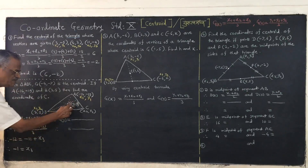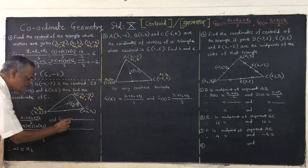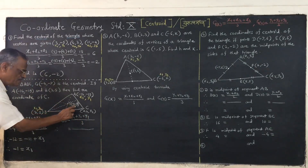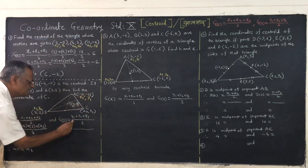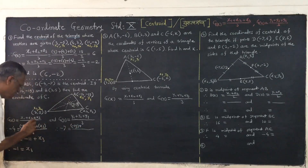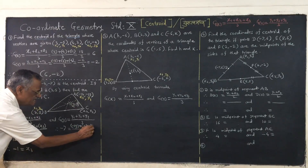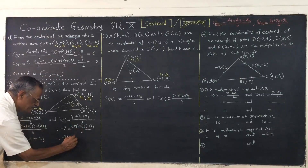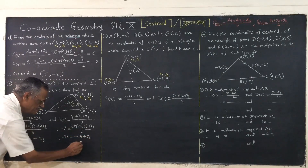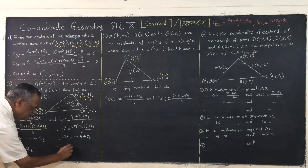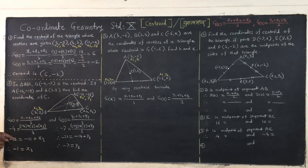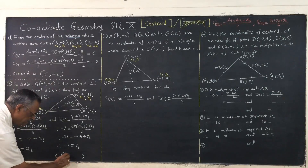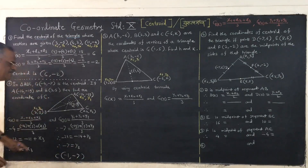Now calculate using the y-coordinate of G. Formula: y1 plus y2 plus y3 upon 3. The y-coordinate of G is minus 7. y1 is minus 19, y2 is minus 14, and y3 is unknown, divided by 3. Multiply: minus 21 equals minus 19 minus 14 plus y3, that is minus 33 plus y3. Transfer to left-hand side: minus 21 plus 33 gives y3 equals minus 7. Wait — recalculating: minus 21 equals minus 33 plus y3, so y3 equals minus 21 plus 33 minus... y3 equals minus 7. So the coordinates of point C are x3 equals minus 1 and y3 equals minus 7.